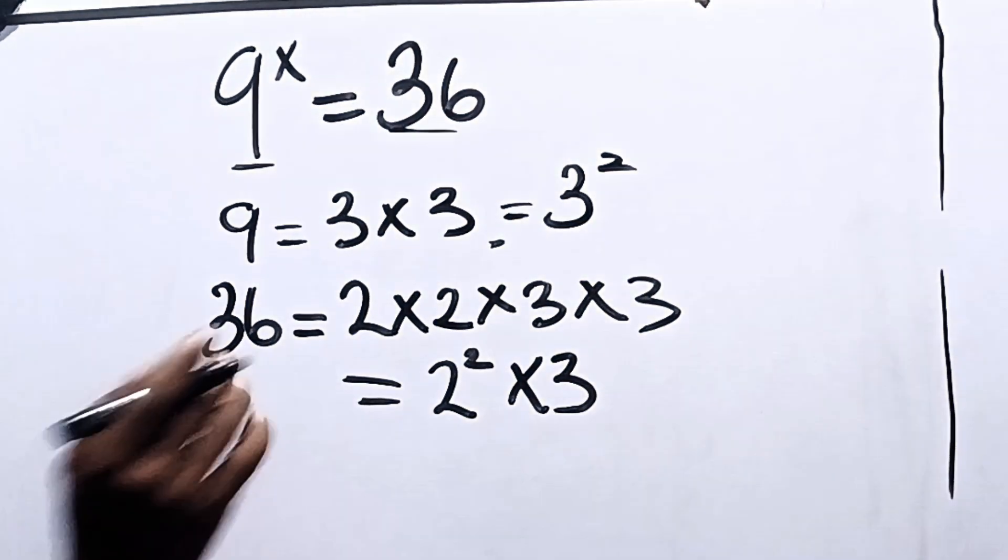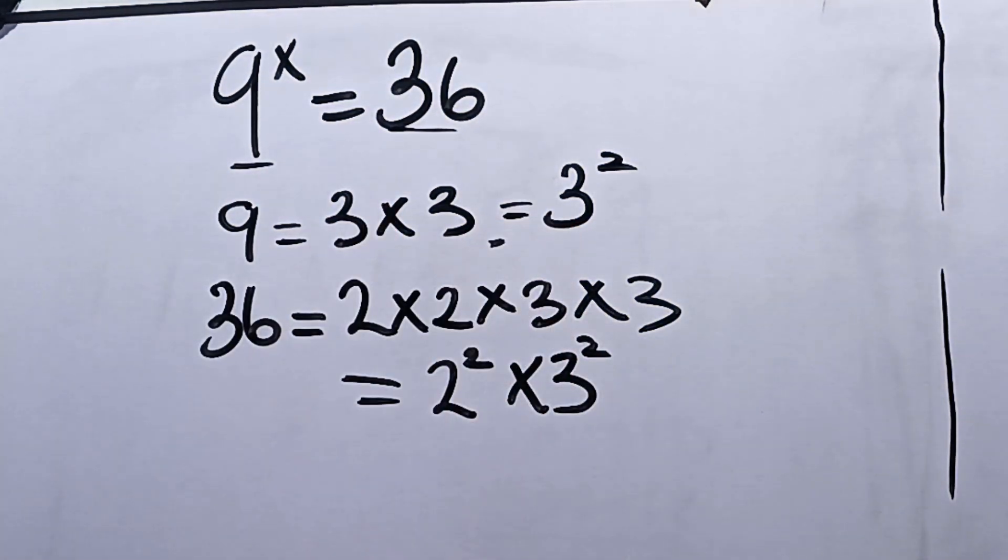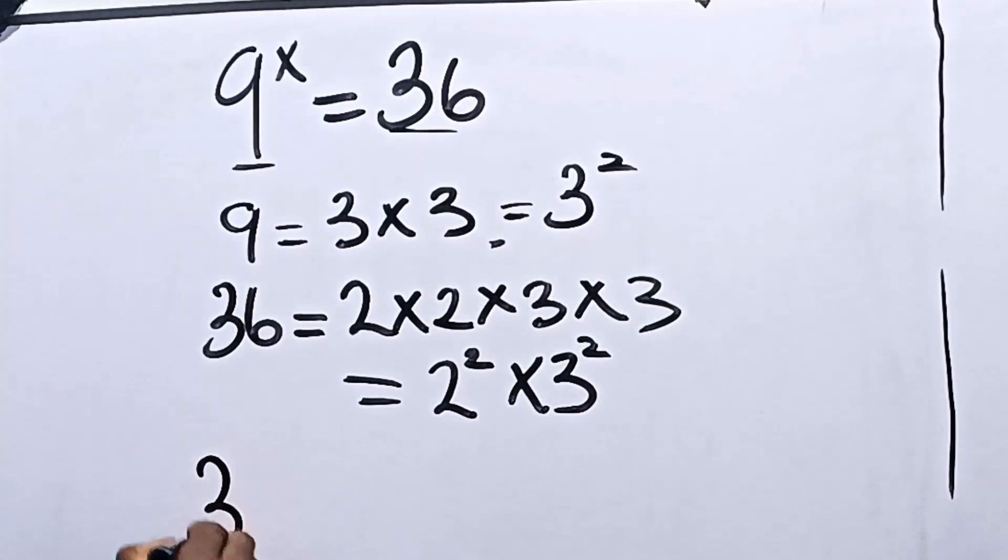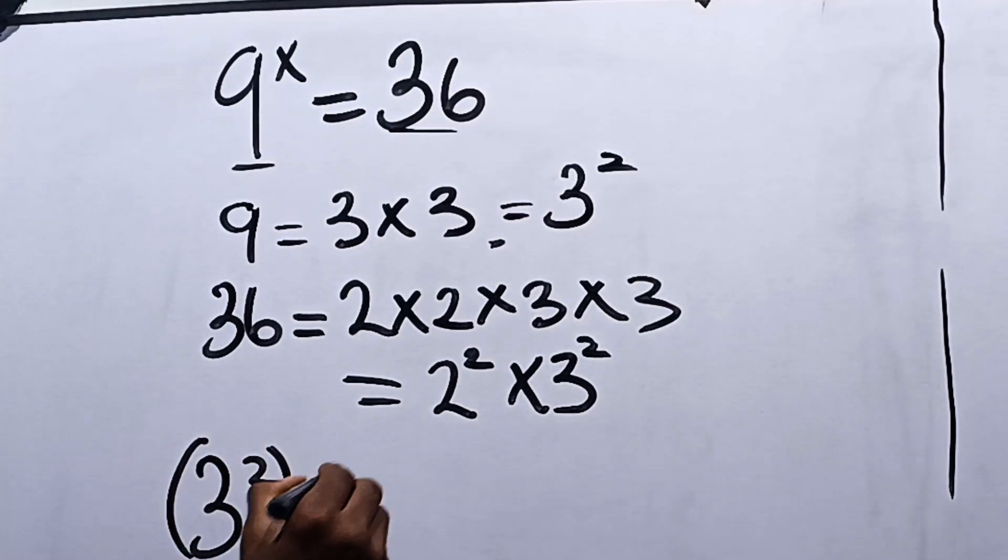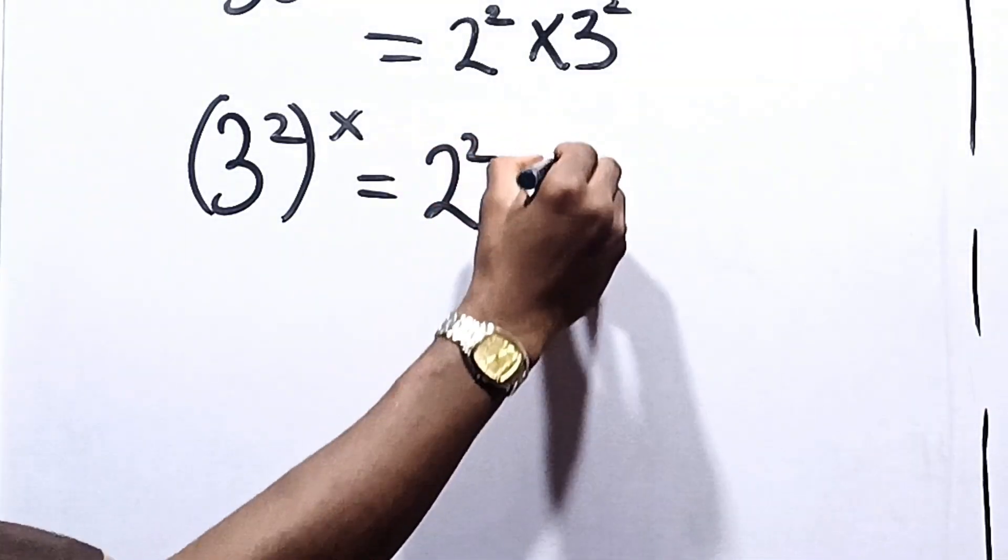Now let's replace 9 and 36 with these multiples in this equation. So we are going to have that 3 squared raised to the power of x is equal to 2 squared times 3 squared.